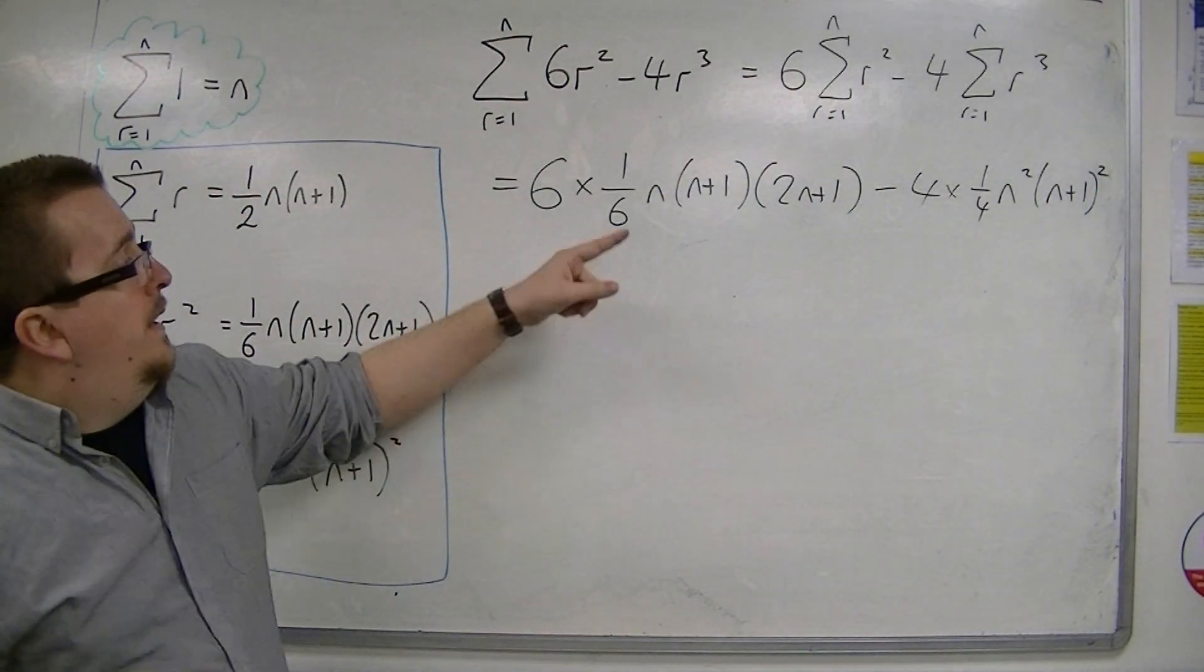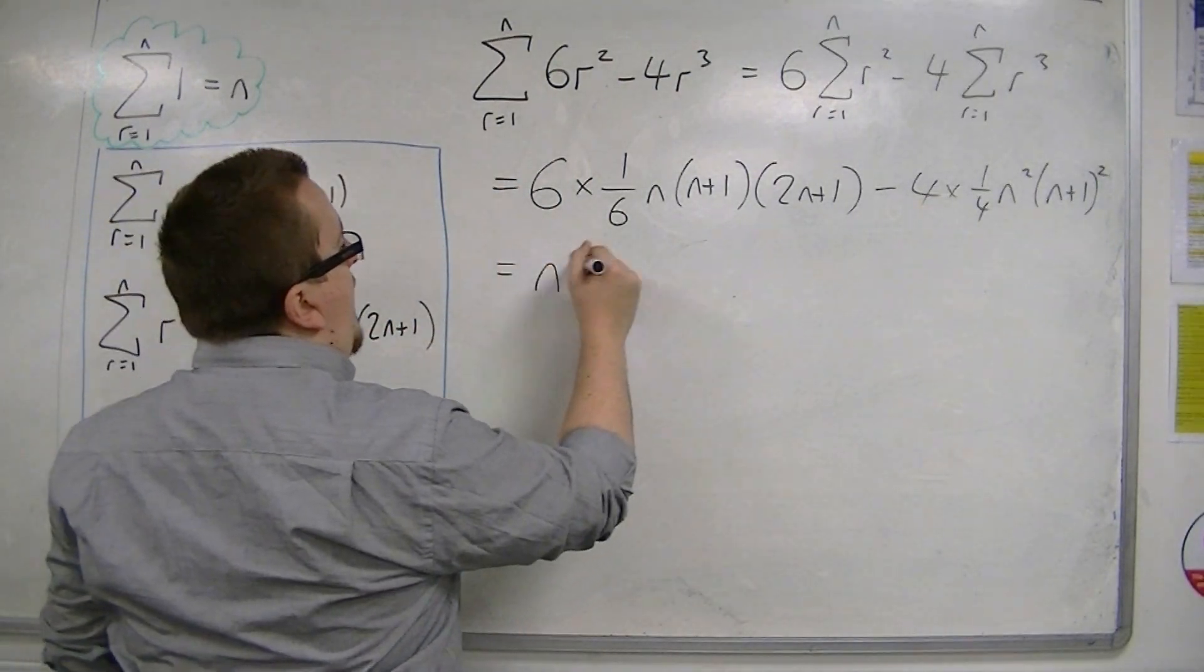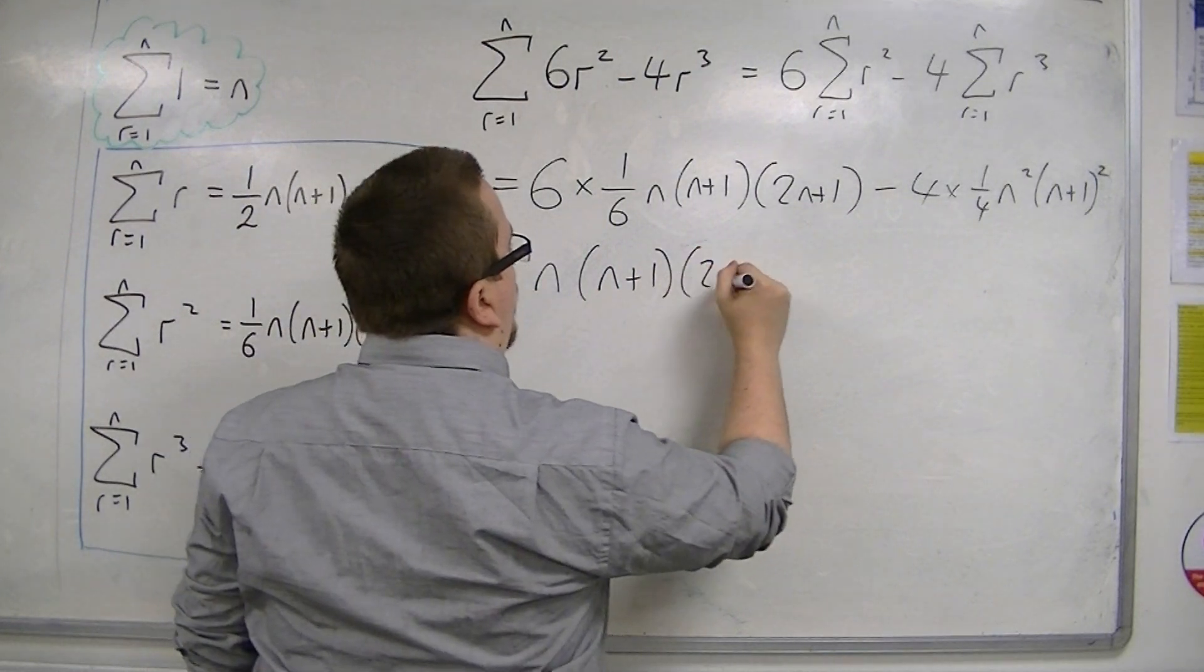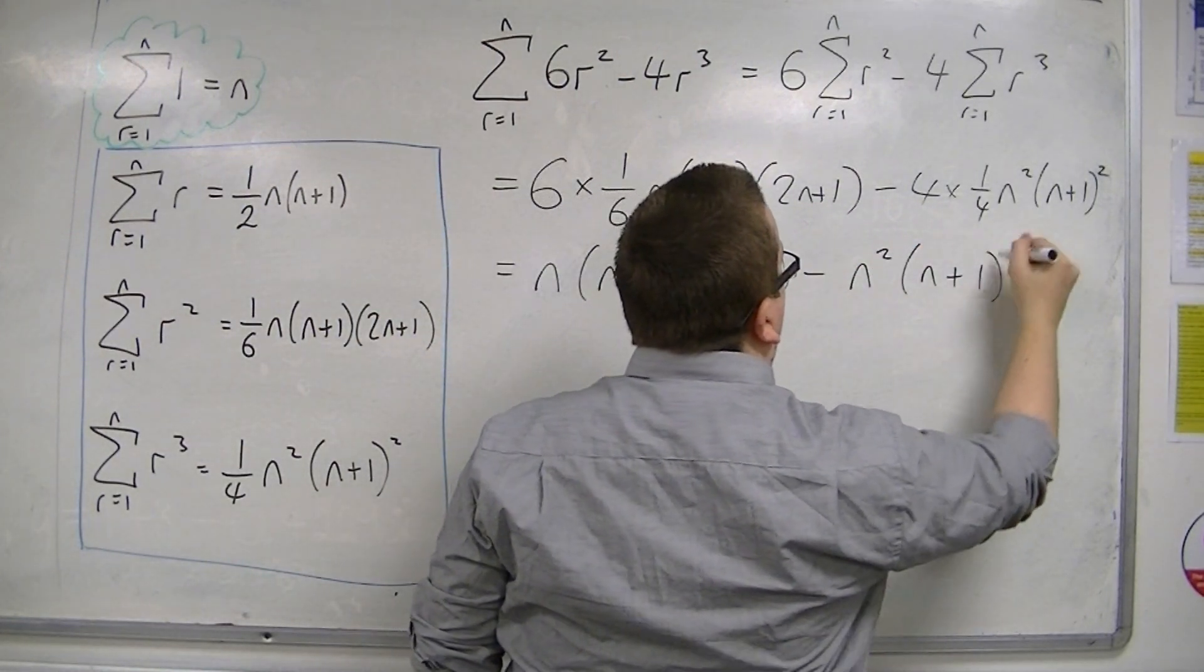So, what we find is that the 6 and the one-sixth cancel, and the 4 and the one-quarter cancel. So, I'm going to be left with n, n plus 1, 2n plus 1, take away n squared, n plus 1 squared.